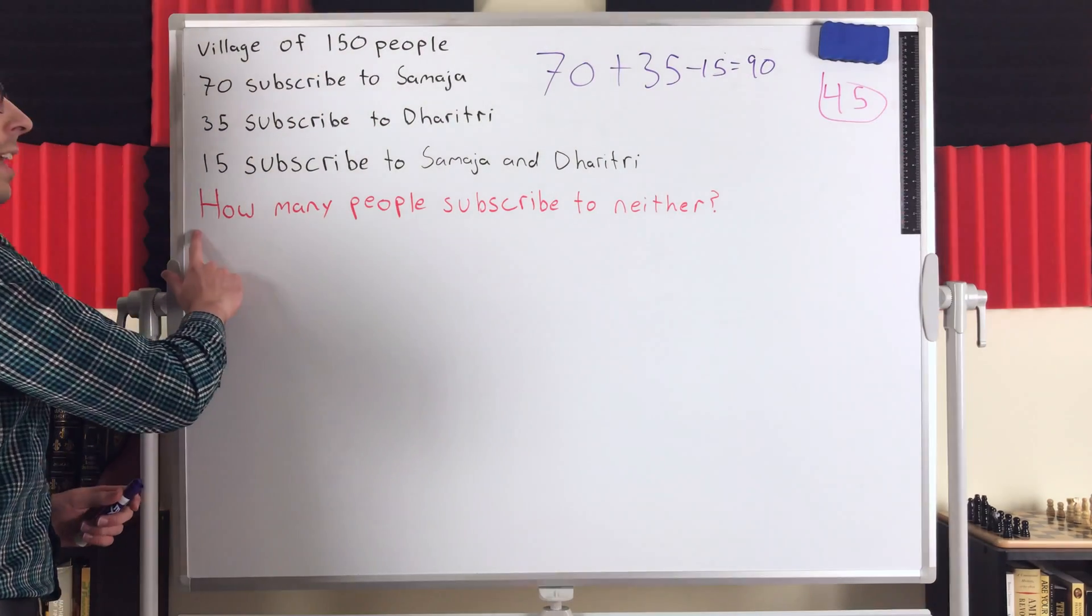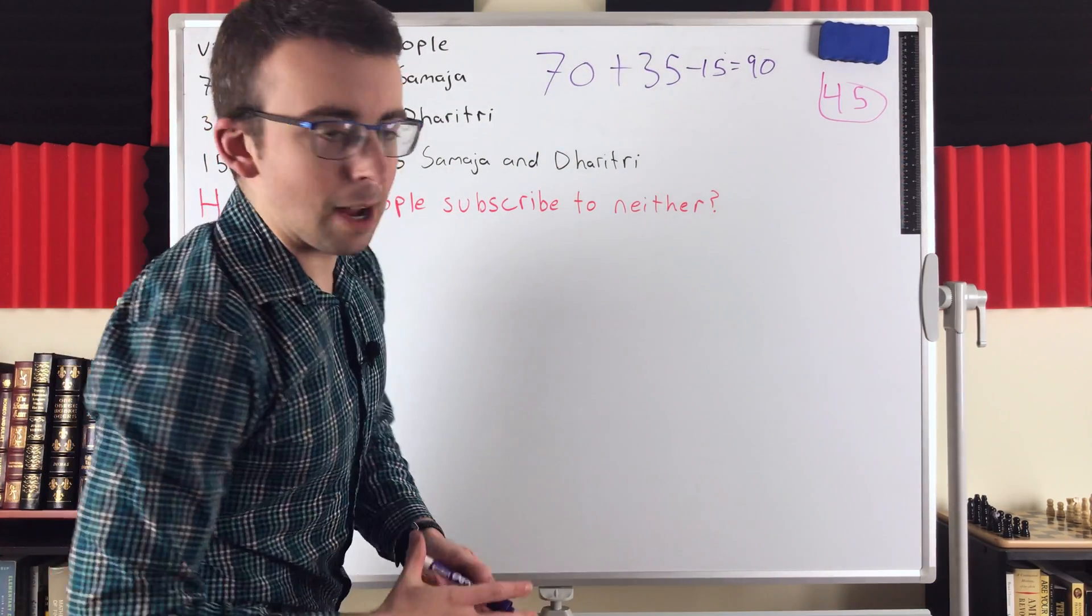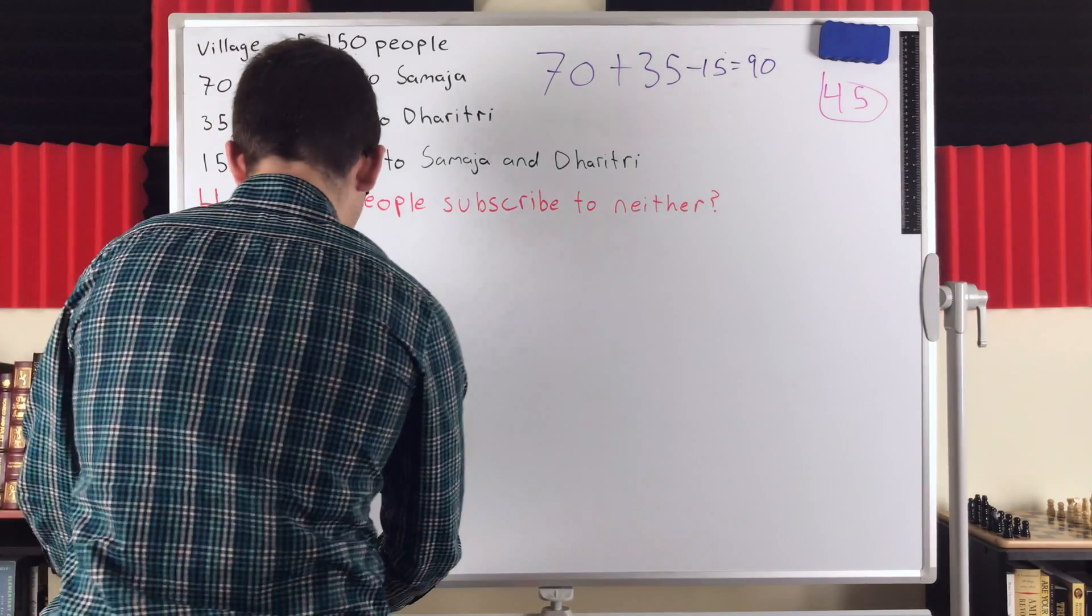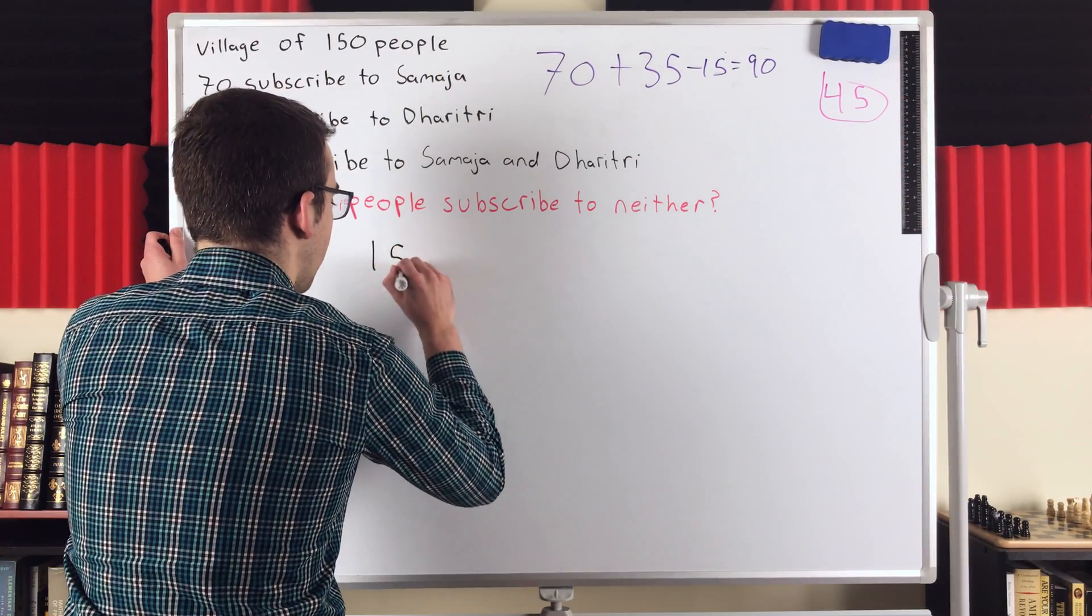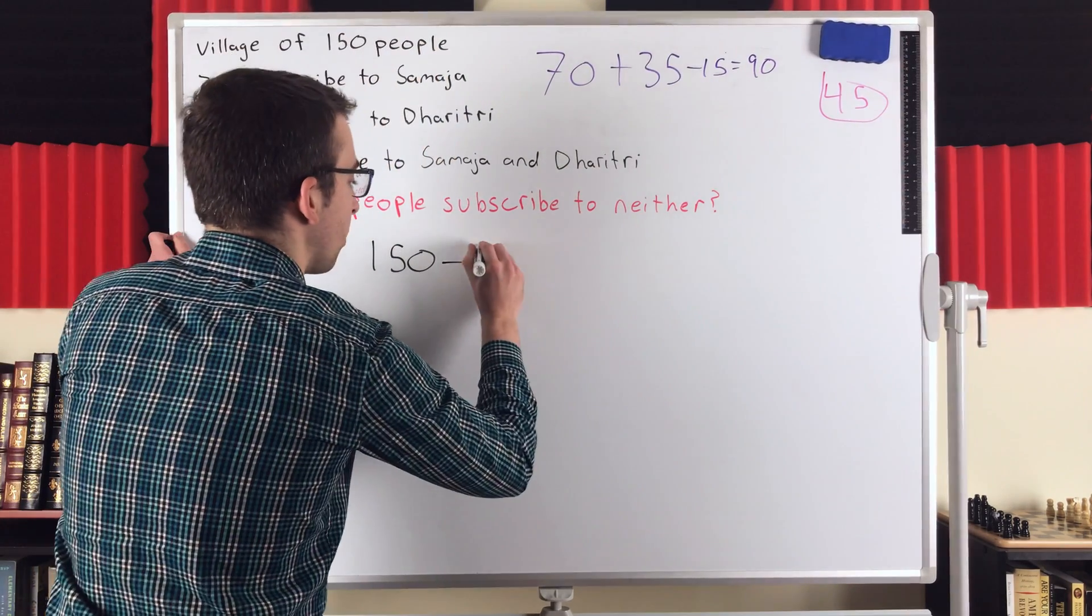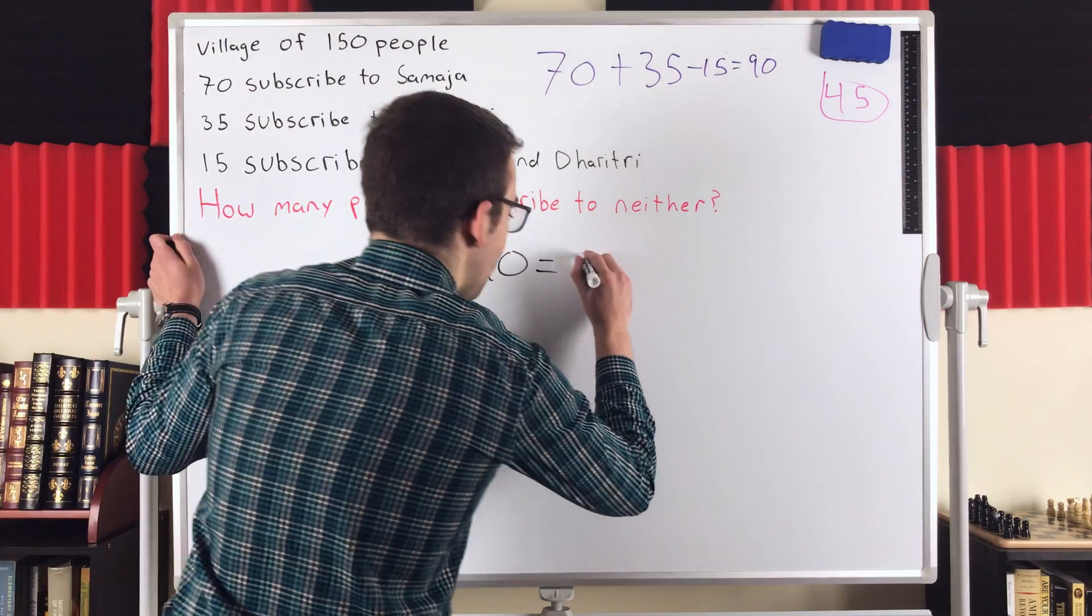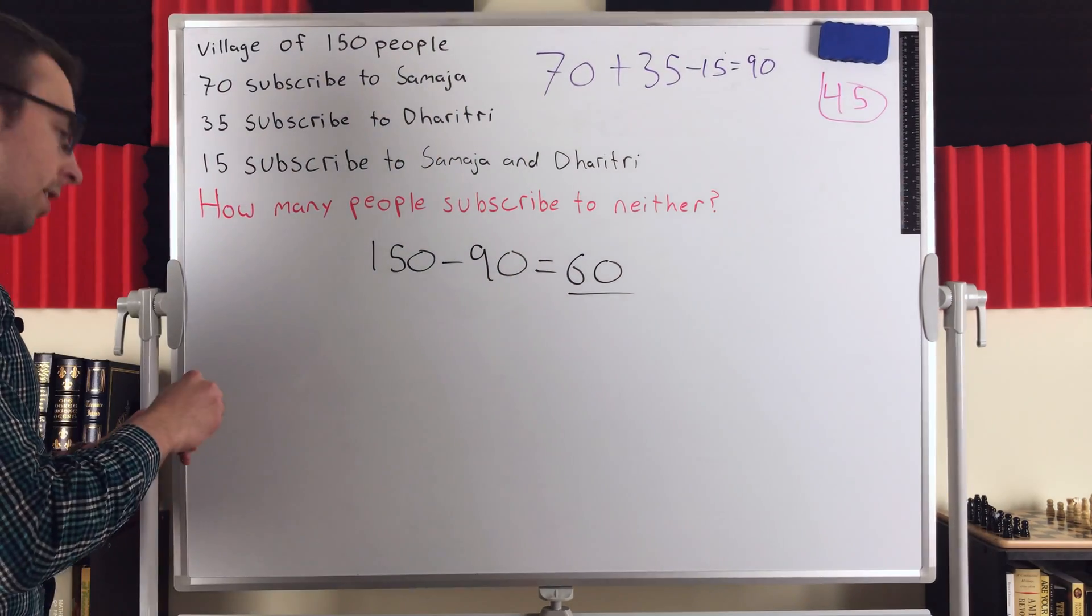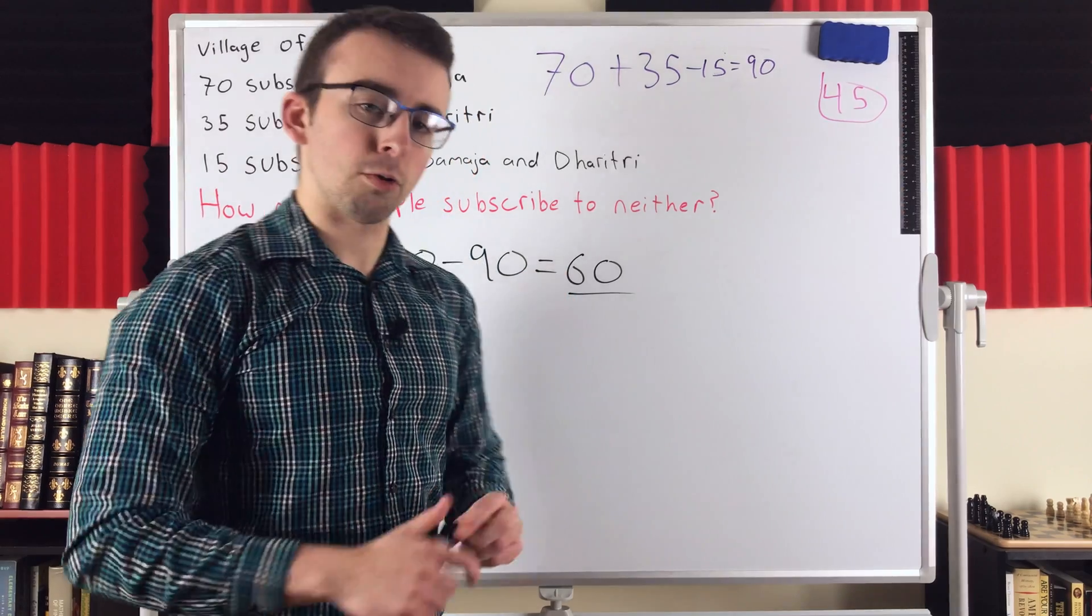So 90 is the correct answer for the number of people who are subscribed to a paper. The question, of course, that we're trying to answer is how many people are subscribed to neither paper, which is why to get our final answer, we have to take the number of people in the village, 150, and subtract the number of people who are subscribed to a paper. 150 minus 90, that gives us 60. That is our answer, the number of people who are subscribed to neither the Samajah nor Dhritri.